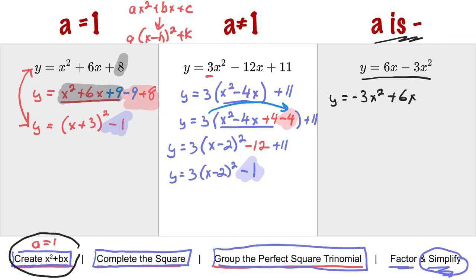I need to create an x squared plus bx. So I factor out the negative 3. And I'll get x squared minus 2x. So now my format is the same as the others.